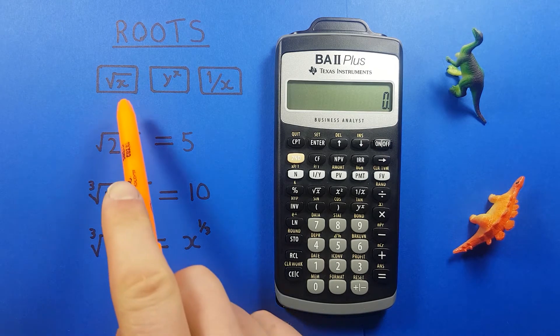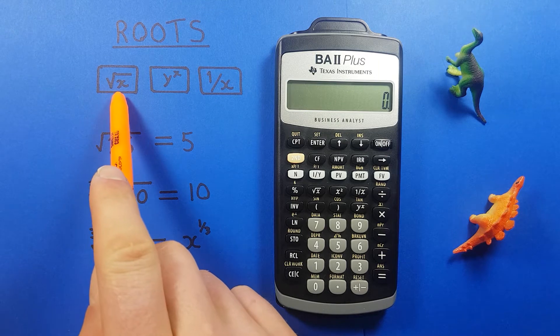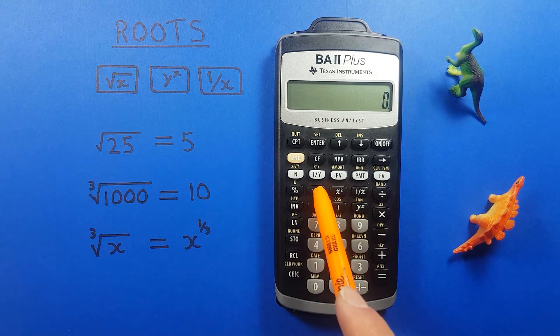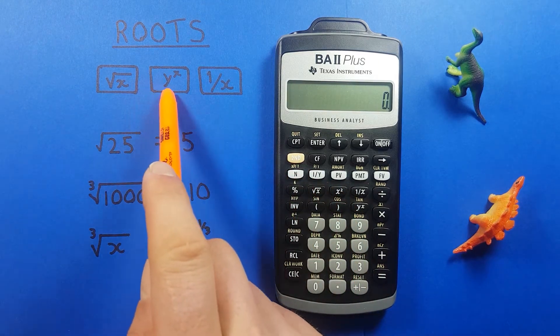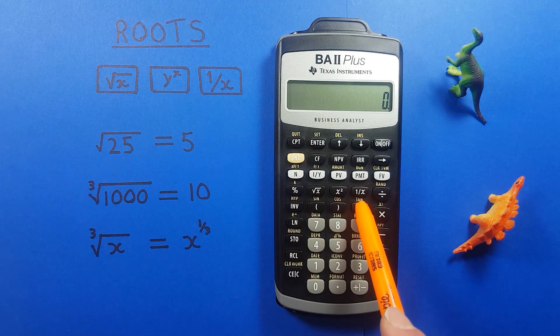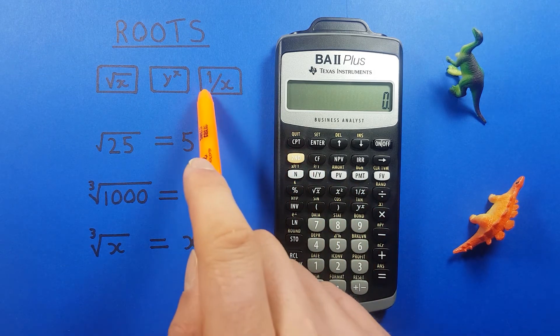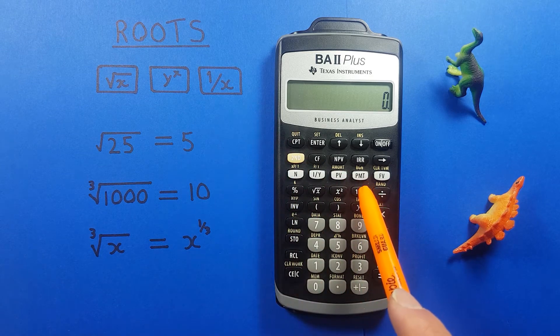To do this we'll be using the square root key that looks like this located here, the y to the x key that looks like this located here, and the reciprocal key that looks like this located here.